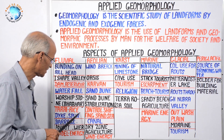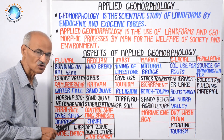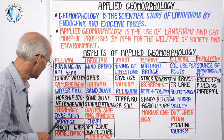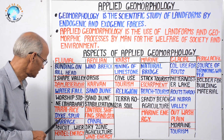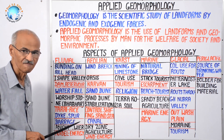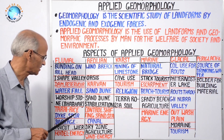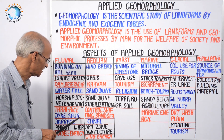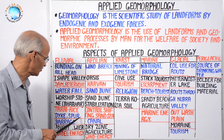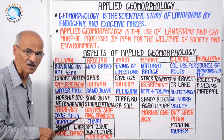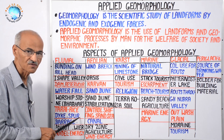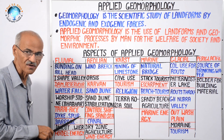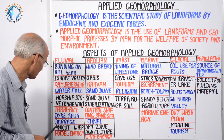Downstream, dykes and spurs are constructed to control lateral erosion by meanders. When dykes and spurs are built, bluffs stop moving, and thus cultural landscapes along the banks of rivers are protected.